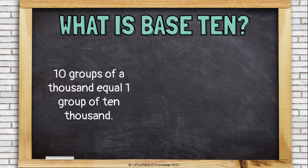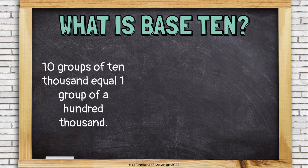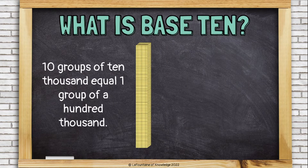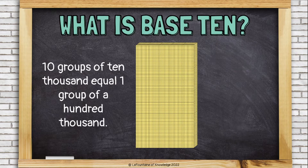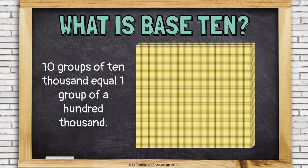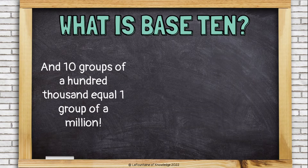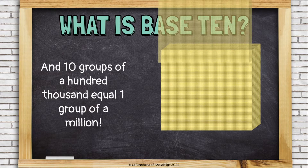10 groups of 1,000 equals 1 group of 10,000. 10 groups of 10,000 equal 1 group of 100,000. And 10 groups of 100,000 equal 1 group of 1,000,000.